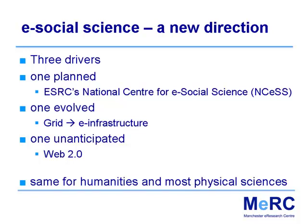One planned: research council programmes tailored to requirements of researchers — for social science, that was the ESRC's National Centre for e-Social Science. One that evolved: the grid didn't do what a lot of people wanted, so lots of techies began changing the technology to meet requirements. The so-called middleware used to run the grid was immensely complicated to set up, and people said we can simplify this, we can make it easy. One completely unanticipated: Web 2.0. Those three drivers changed the direction from the vision of bigger, faster, more collaborative science. E-Social Science picks up on that, and so did humanities and a lot of physical sciences — very few physical scientists were actually served by bigger, faster, more collaborative.